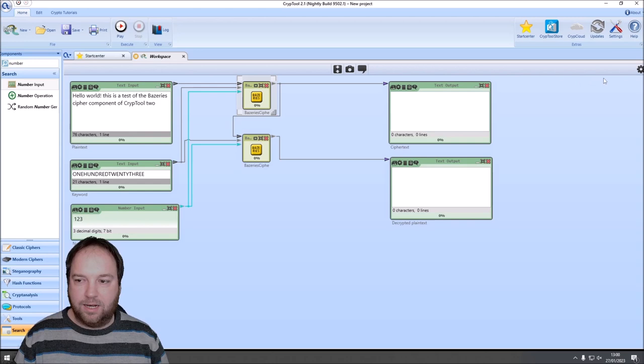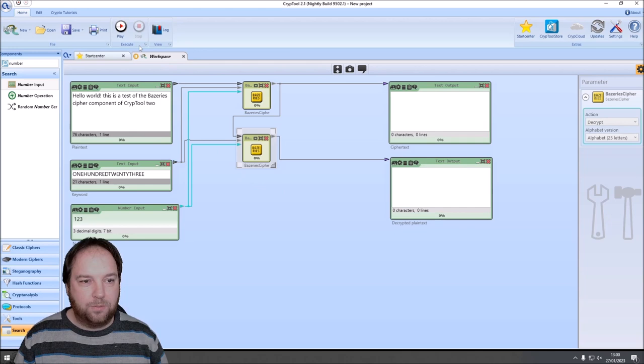When we now press play, we have here our cipher text created by the first component here. And here's the decrypted plain text.